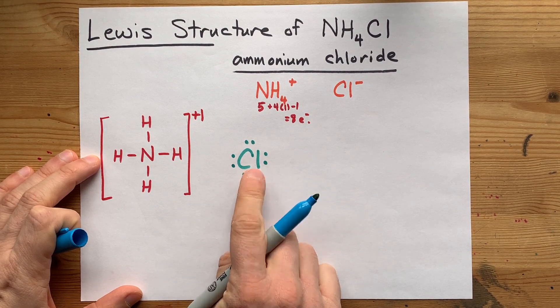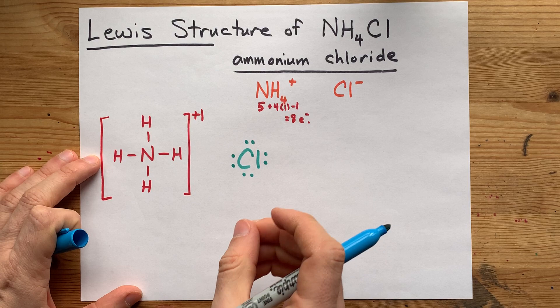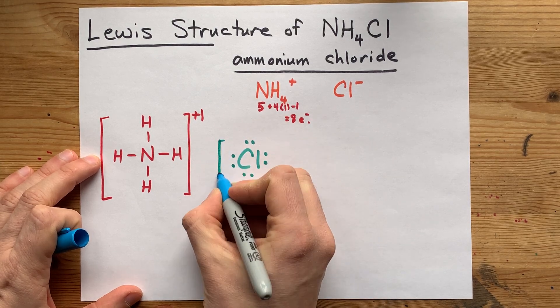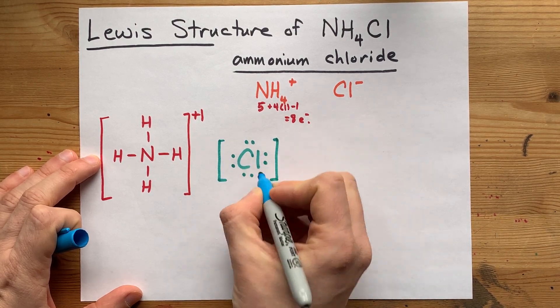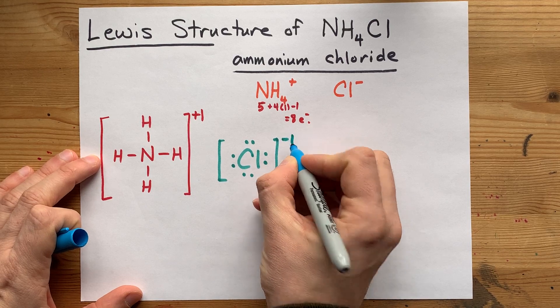Now that's a complete octet. Eight electrons in chlorine's outer shell, and that makes it stable as well. So put it in square brackets, give it a minus one charge.